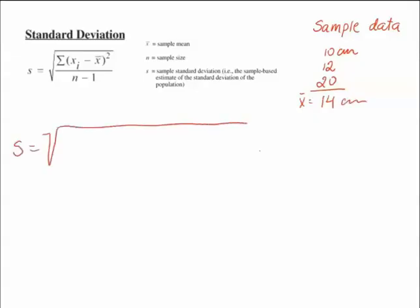So we have the first value, 10, minus the mean, which is 14, squared. Notice there is a summation sign, so it means we have to add these values together. Second value was 12, 14 is our mean, squared. And the third one, 20, minus 14, squared.